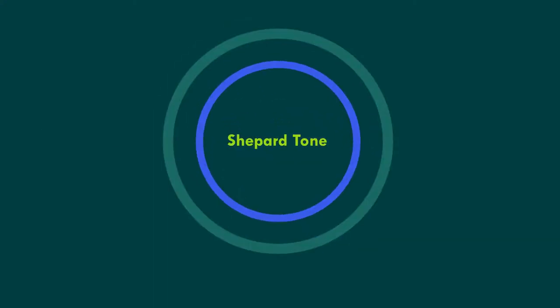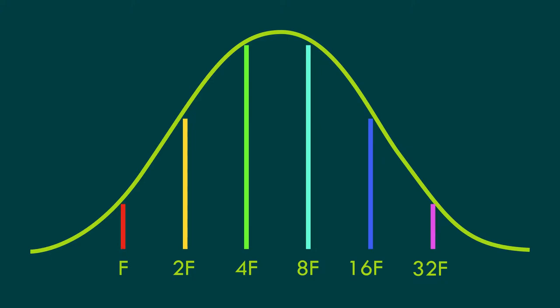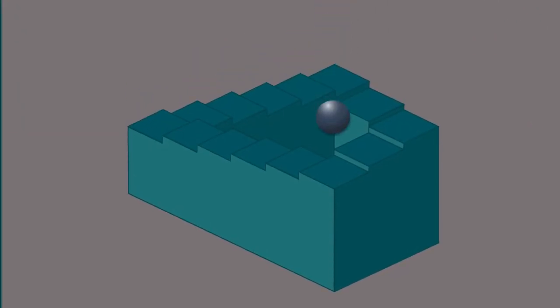One of these illusions is the so-called Shepard tone, named after Roger Shepard. This tone is a sound consisting of a superposition of sine waves separated by octaves, the amplitudes tapering off at their low and high ends.